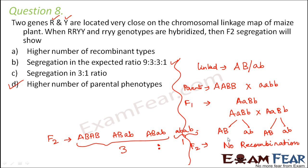To solve this type of question, the approach to follow is the elimination approach. Options A and B would not be correct because the question talks about linkage. Between C and D, option C would be more appropriate only when the genes are absolutely linked, so option D — higher number of parental phenotypes — is the more appropriate answer.